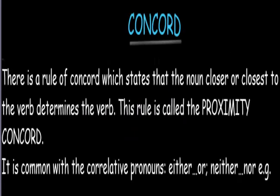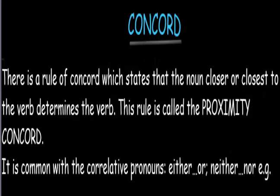I've tried to explain the rule previously using either/or and neither/nor — when they come with singular subjects the verb must be singular. When these words come with both a singular and a plural subject, the verb takes the form of the subject closest to it. This kind of concord rule is what we call proximity concord: the noun closer or closest to the verb determines the verb.